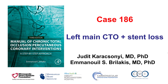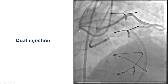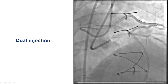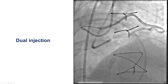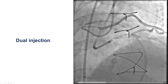This is a case of left main CTO that was complicated by stent loss. The patient presented with severe angina. He had previous coronary bypass graft surgery 19 years prior, and had also undergone PCI of the left main 16 years prior with two Taxus drug-eluting stents. He was found to have a lesion in the right coronary artery that was successfully treated, but he also had a significant lesion in the mid-LAD that was filling retrograde through the radial graft. This is the angiogram of the radial graft anastomosed to the diagonal branch, with retrograde filling of the LAD showing a significant lesion immediately distal to the origin of the diagonal branch.